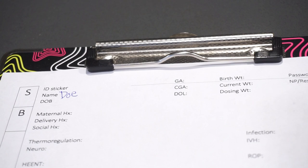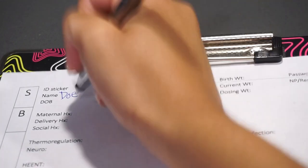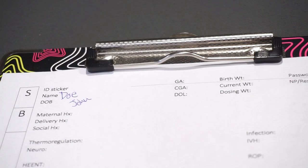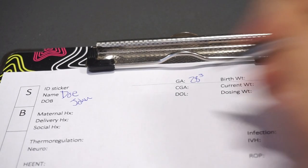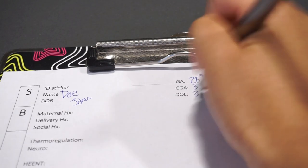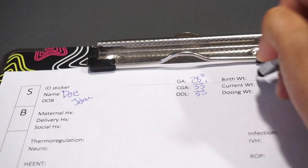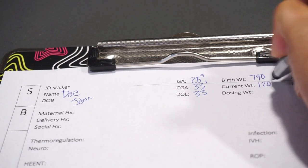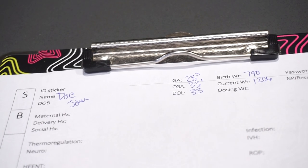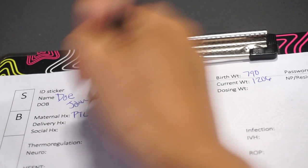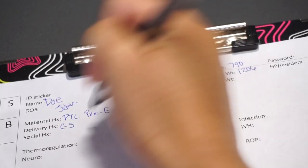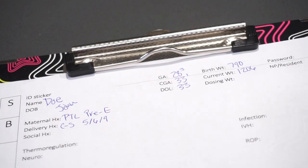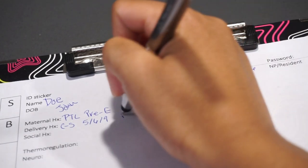Alright, so this is baby Doe. First name is John. So I usually write the first name on the sticker. So John was born at 28 weeks and 3 days. He is now 33 and 1. This is day of life 33. Birth weight was 790 and current weight is 1206. As for maternal history, mom went into preterm labor and she also had pre-E. It was a C-section and APGARs were 5, 6, and 9. So he was also intubated and surfed times 1.